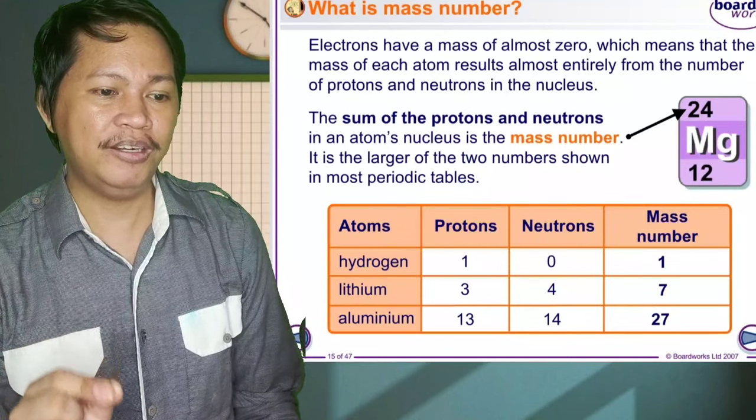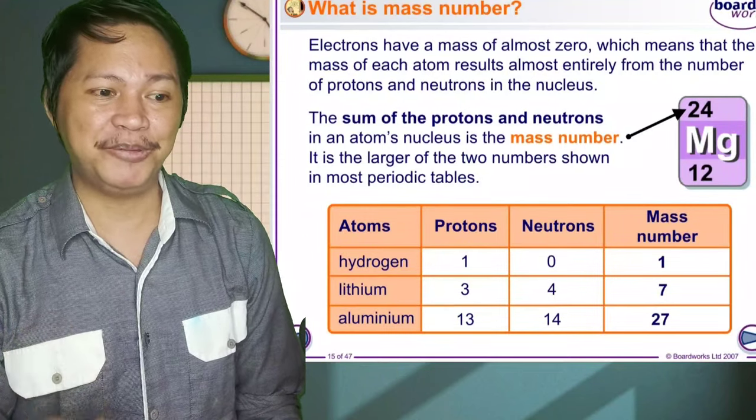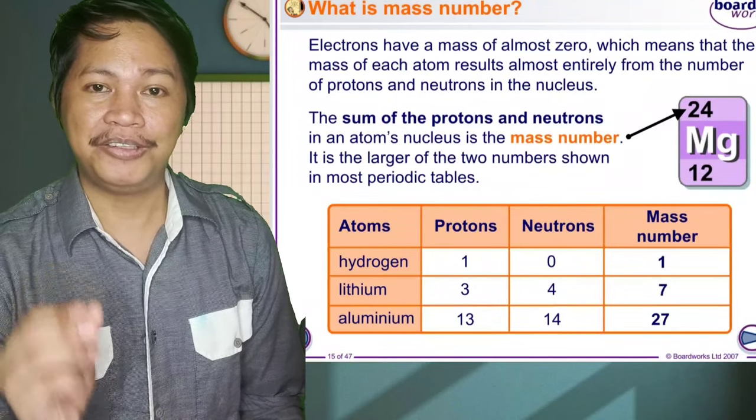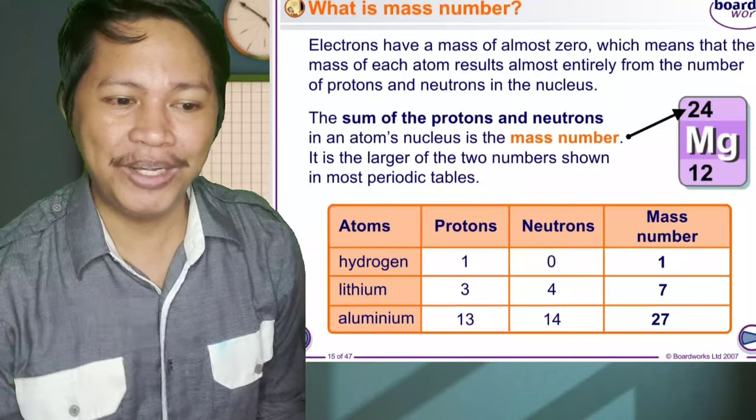So proton 1, neutron 0, mass number 1. Lithium: we have 3, 4, and 7. Aluminum: 13, 14, and 27.